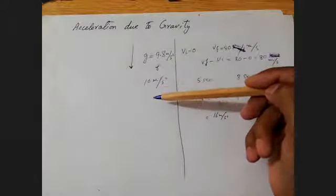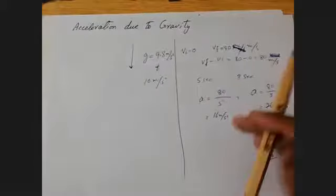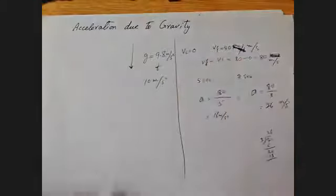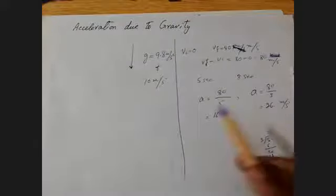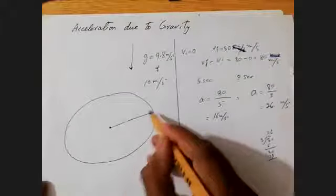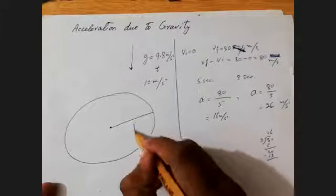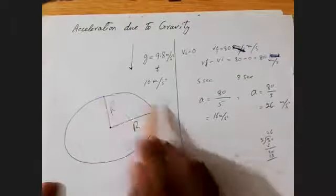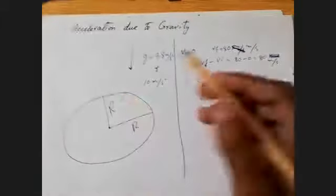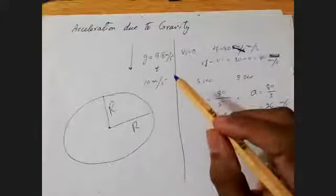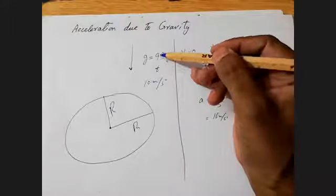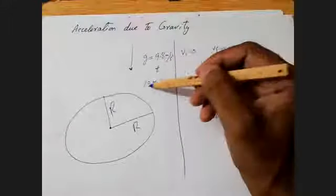This value may range from 9.8 to 10 meter per second squared depending on where you are conducting the experiment. The Earth is not a completely round sphere — it is somewhat oval. Due to differences in the Earth's radius — where the radius is greater or smaller — the acceleration due to gravity may change, but it will remain within the limits of 9.8 to 10 meter per second squared.